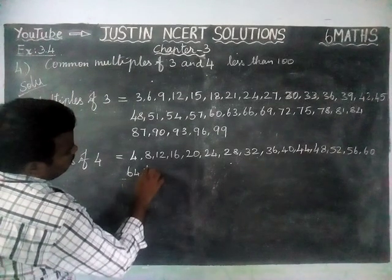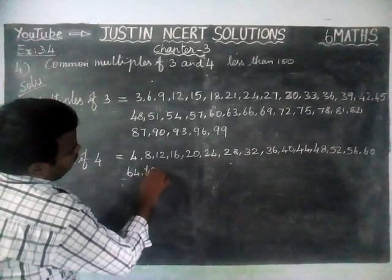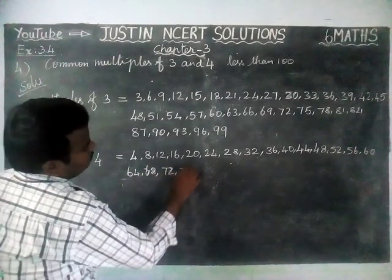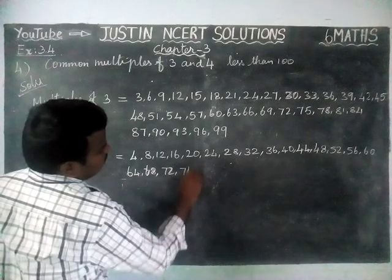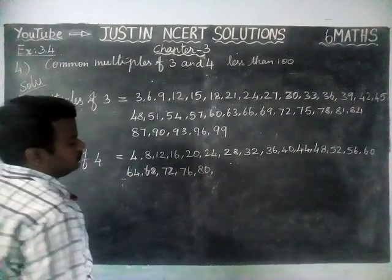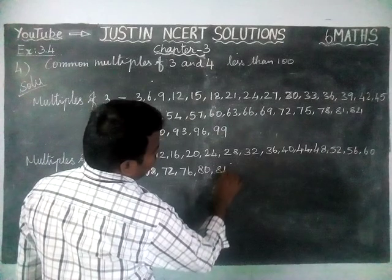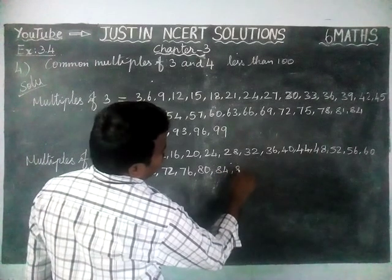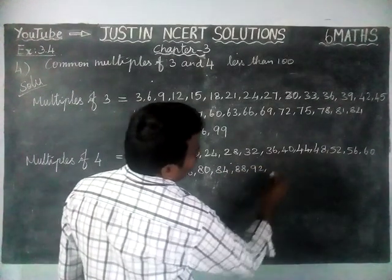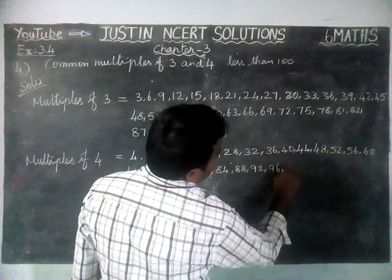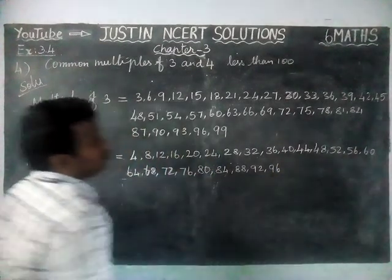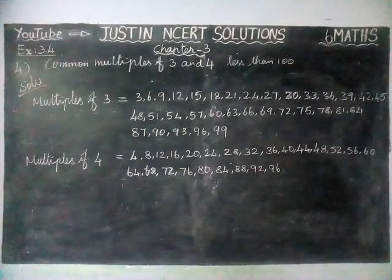Continuing the multiples of 4: 64, 68, 72, 76, 80, 84, 88, 92, 96. 100 will not come — up to 96 only.